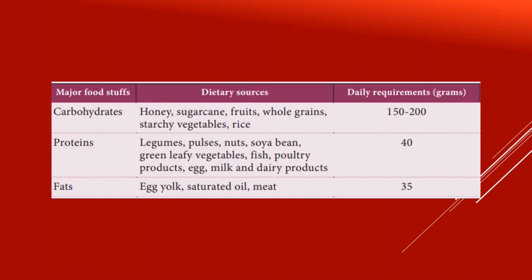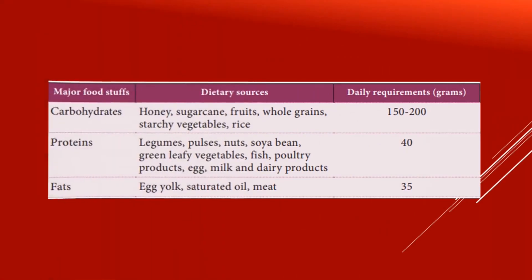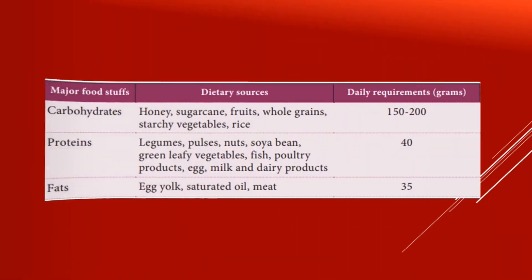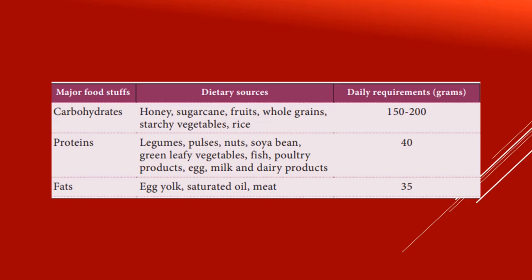Carbohydrates: we can get carbohydrates from honey, sugarcane, fruits, whole grains, vegetables, and rice. These are the major sources of carbohydrates. The daily requirement for a normal human body is 150 to 200 grams.